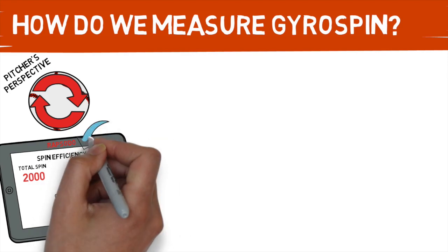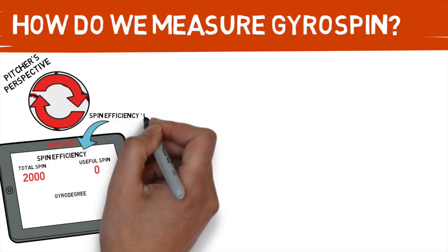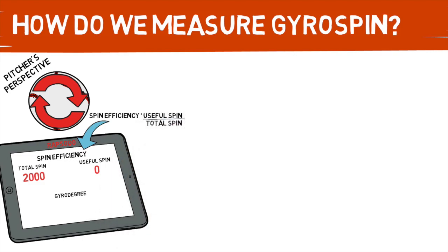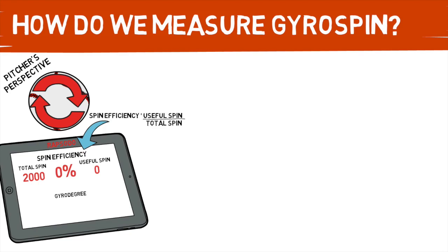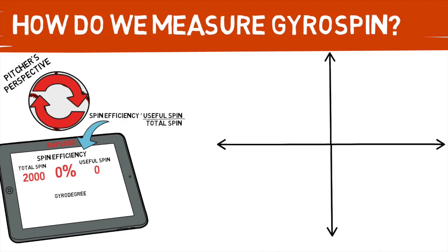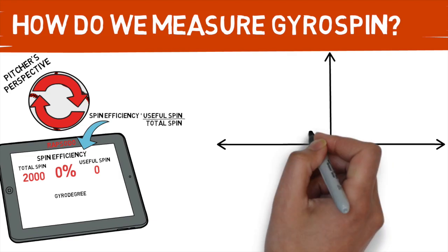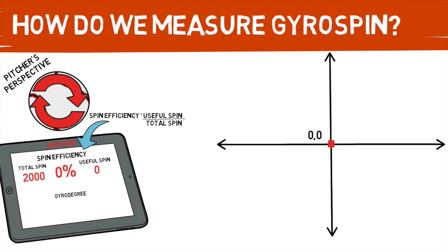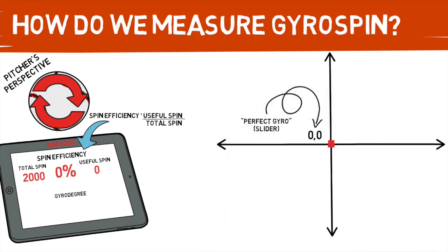Rapsodo also spits out a spin efficiency metric that is much easier to understand and interpret. Basically all that goes into this equation is your useful spin divided by your total spin — in this case our spin efficiency would be zero. So how does this look on our horizontal and vertical movement charts? Because the chart displays the effect a pitcher is putting onto a ball, and this ball has perfect gyro spin that doesn't affect movement in any way, it would fall at that zero-zero mark, meaning the pitch is purely going to be pulled down by gravity and nothing else.